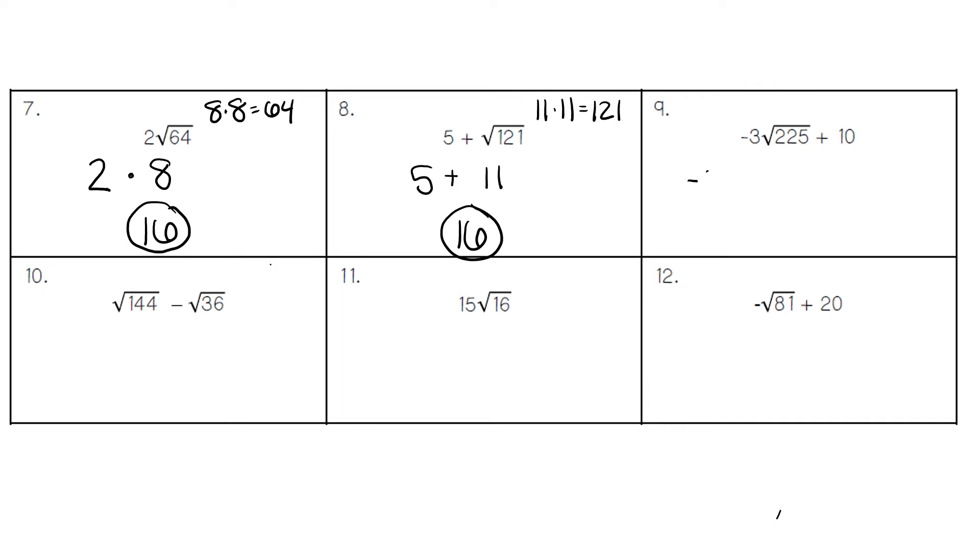In problem number nine, we keep the negative three out in front. The square root of 225 is 15, and because those are side by side, we multiply them. Remember, 15 times 15 is 225. We keep the plus 10 at the back. Negative three times 15 gives us negative 45. Negative 45 plus 10 gives us negative 35.